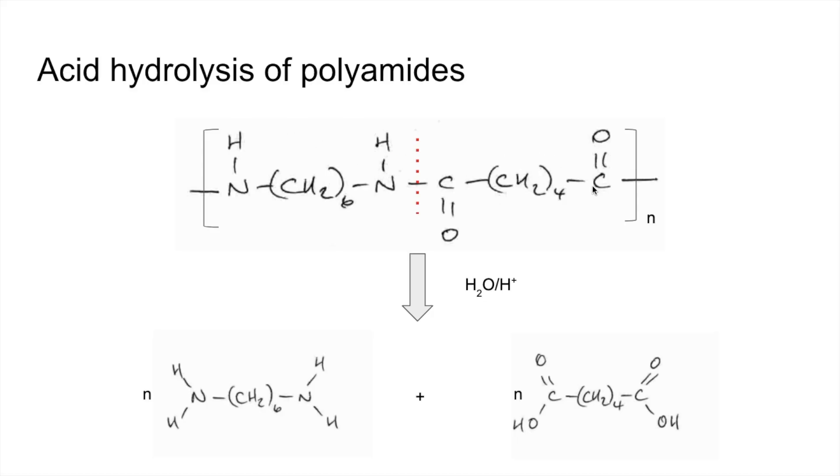But for this you've got to bear in mind you've got H+ ions present. They're going to be accepted by the nitrogens on the diamine, so you're actually going to get the salt for the diamine.